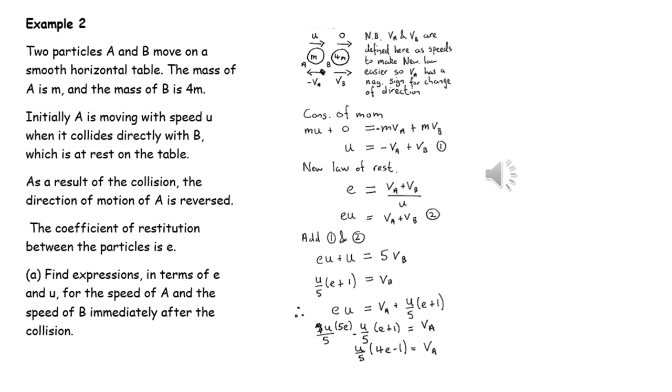We can apply conservation of linear momentum and Newton's experimental law to get expressions for the speeds of A and the speed of B immediately after the collision. Be careful when doing conservation of linear momentum that we define one particular direction as being positive. In these solutions, we've taken the initial direction of A as being the positive direction.